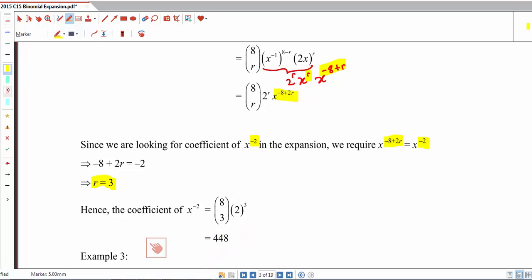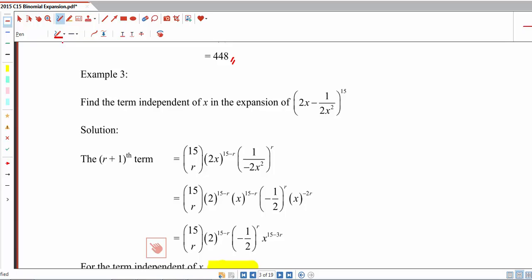And to do that, we'll substitute r equals to 3 back into the coefficient of the general term that we found previously. And then we will have the coefficient to be 448. Let's look at example 3 now.